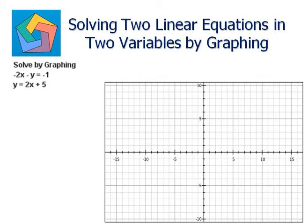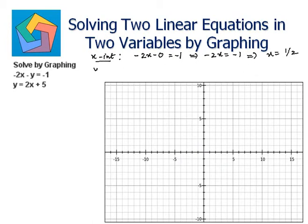Next problem: solve by graphing negative 2x minus y is equal to negative 1 and y is equal to 2x plus 5. Let us find the intercepts first. For negative 2x minus y equals negative 1, the x-intercept: put y as 0, so negative 2x equals negative 1, dividing by negative 2 gives x as 1/2. So (1/2, 0) is the x-intercept.